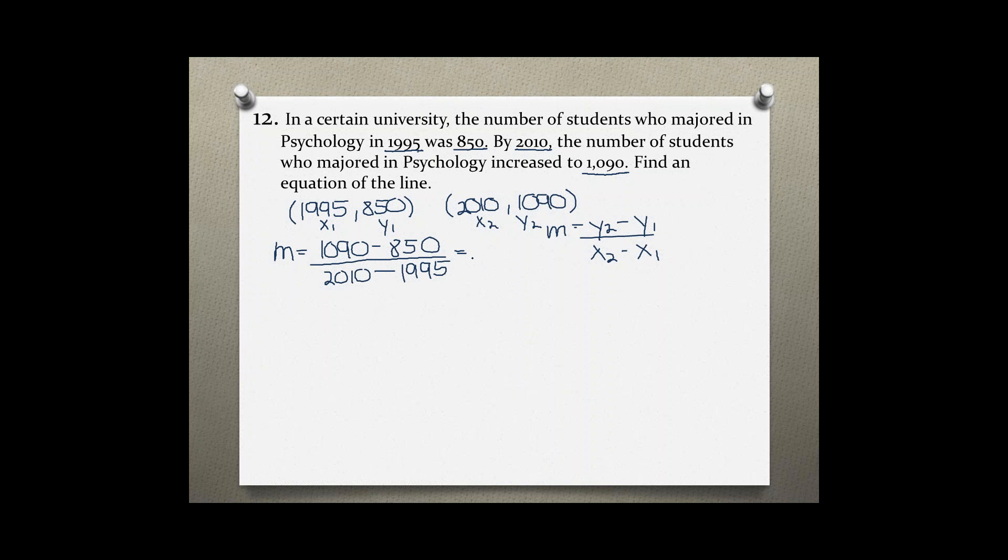If you subtract the numerators, you are going to get 240. Subtract the denominators, you get 15. And this 15 goes in evenly, so 240 divided by 15 is 16, no rounding necessary. Now you have the slope.